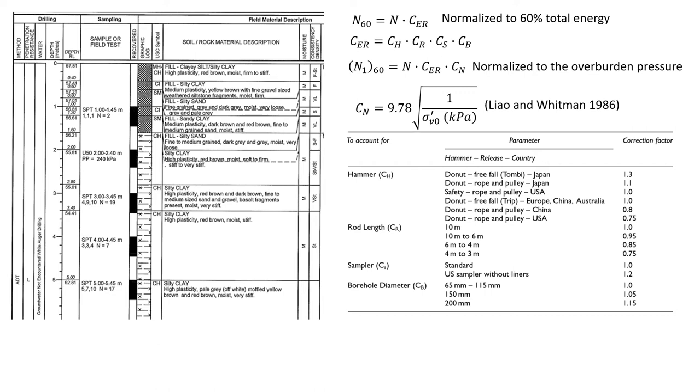This video will explain how to normalize blow counts from standard penetration test. We're going to correct it for 60% of total energy that we use in such tests, and we're also going to normalize it to the overburden pressure of about 100 kPa.